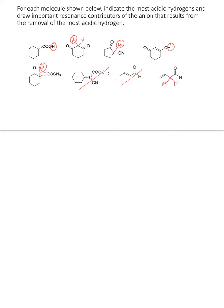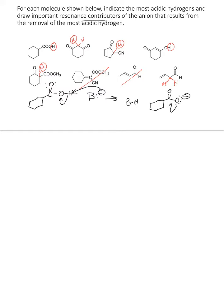For the important resonance contributors: basically you're going to draw these compounds with some kind of base deprotonating, and then this generates an anion. The resonance structure would be where the electrons are pushed towards the oxygen — that would be a resonance structure for the first one.